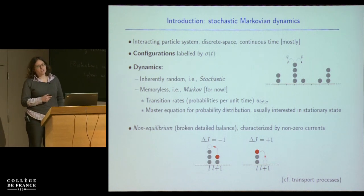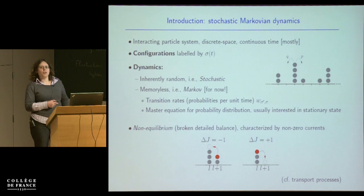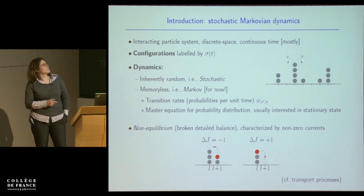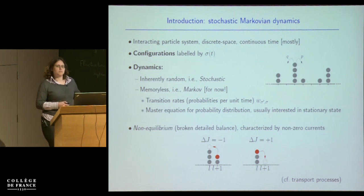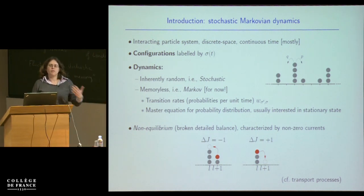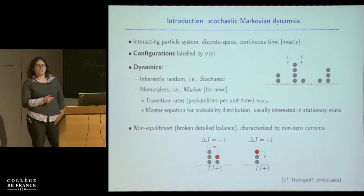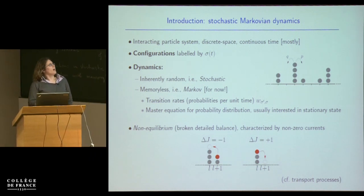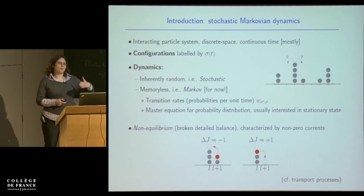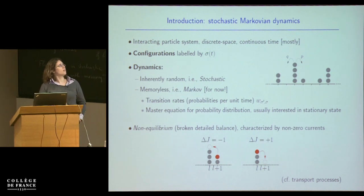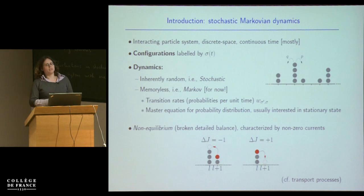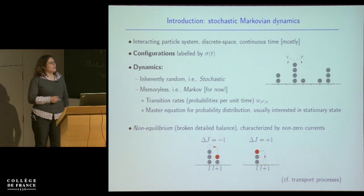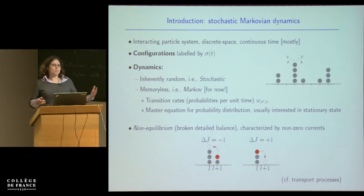All of these kinds of systems can be modelled at a very simple cartoon level within the framework of stochastic Markovian dynamics — or mathematically, interacting particle systems. You get rid of the details of the individual things and replace them with abstract particles which move according to certain rules. We're going to assume discrete space, so particles on a lattice or balls in boxes, and for the first part of the talk we assume continuous time, so particles can move at any time without waiting for a clock to tick.